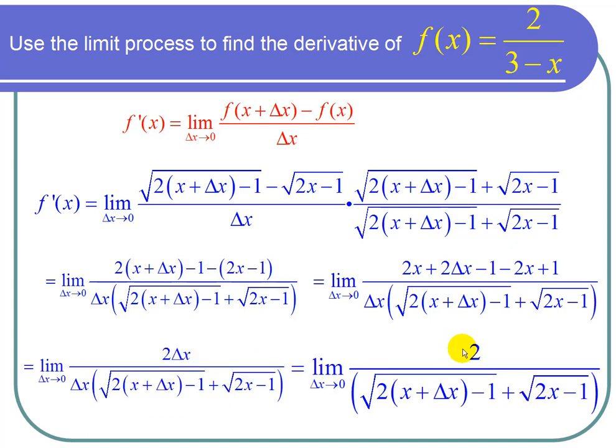Once I've canceled, that's when it's time to plug in. So my delta x is approaching 0, so I plug in 0 for delta x. And I end up getting 2 over the square root of 2 times x plus 0, and that's just 2x minus 1 plus root 2x minus 1.